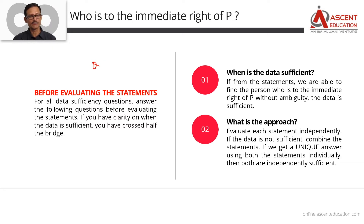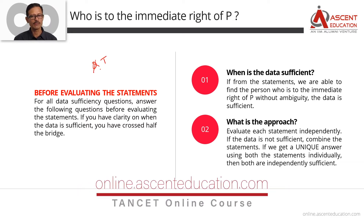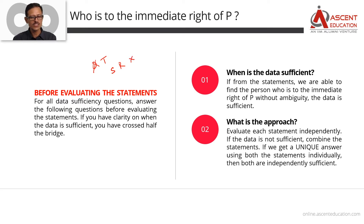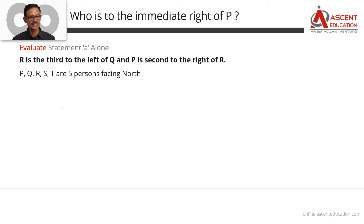Let's evaluate Statement A alone. Statement A says: R is third to the left of Q, and P is second to the right of R. So, counting from Q — immediate left, second left, third left — R is third to the left of Q. And from R, counting right — immediate right, second right — P is second to the right of R.